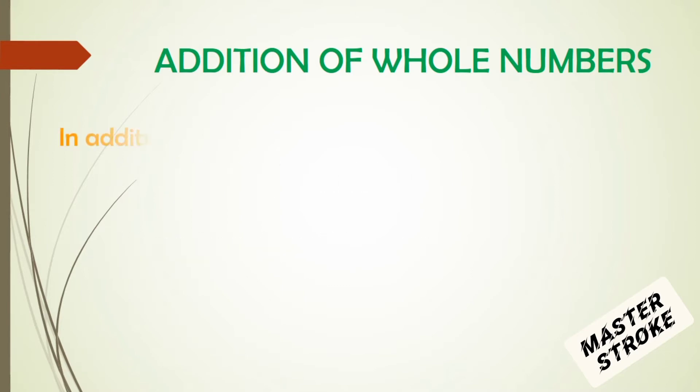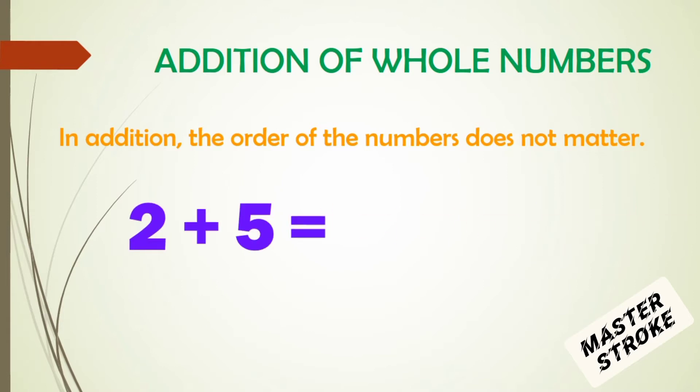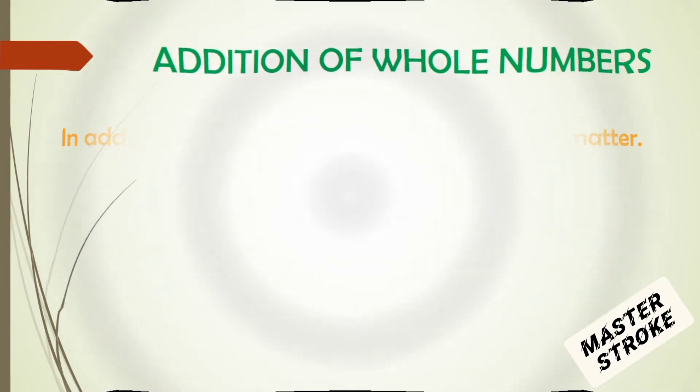Before we proceed, let's note that in addition, the order does not matter. For example, 2 plus 5 equals 7. If we interchange the numbers 2 and 5, then we will have 5 plus 2, which also equals 7. So it doesn't matter which number comes first.